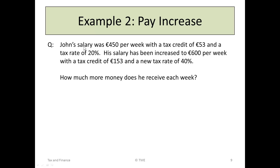Example 2. John's salary was €450 per week with a tax credit of €53 and a tax rate of 20%. His salary has been increased to €600, with a tax credit of €150 and a new tax rate of 40%. How much more money does John receive now? He's gone to €600 but the tax is 40%, though he also has a higher tax credit, so we'll do the calculation.